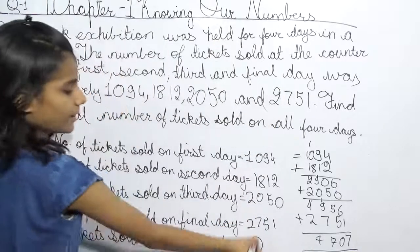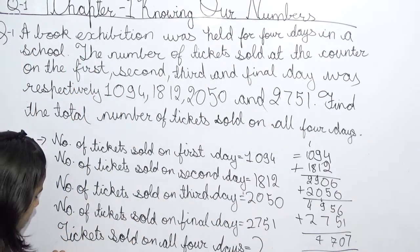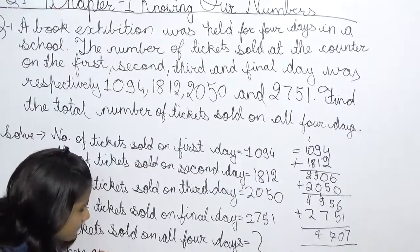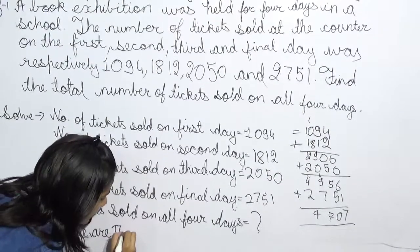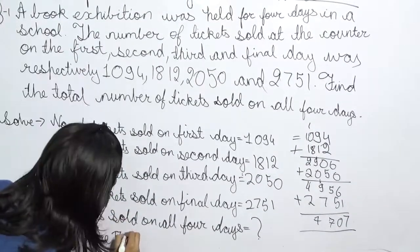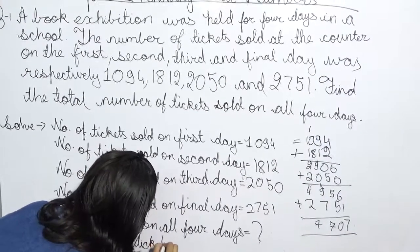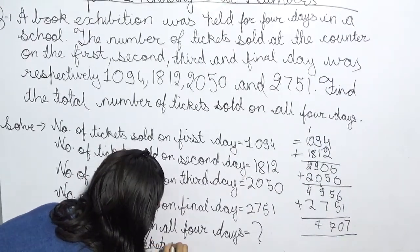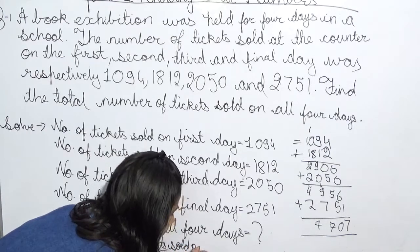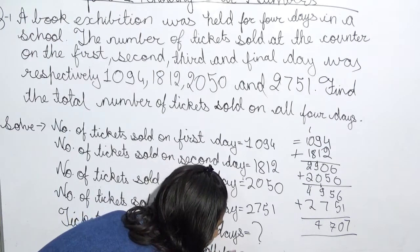So this was your answer. There are 7707 tickets sold on all 4 days.